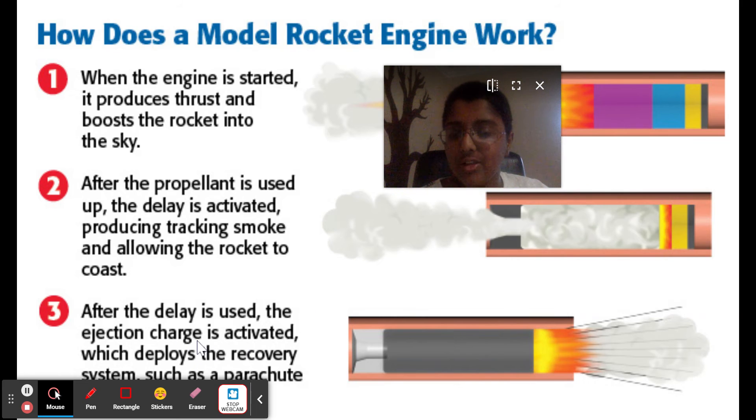And after the delay is used, the ejection charge is activated, which basically deploys the recovery system. Or basically, it just throws the fuel or rocket fuel system off of the whole space shuttle. And then it just sends it off to orbit.